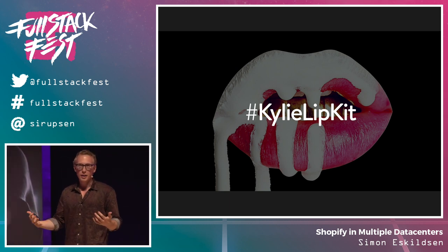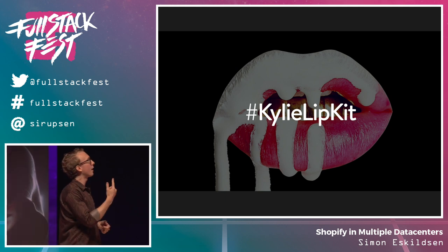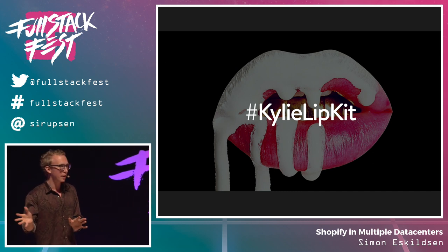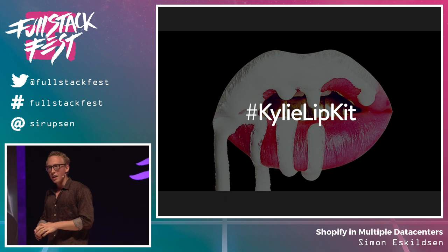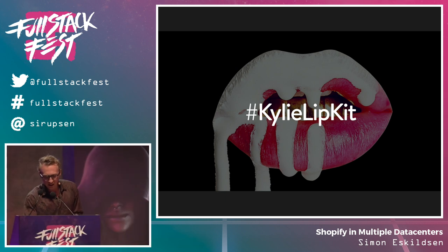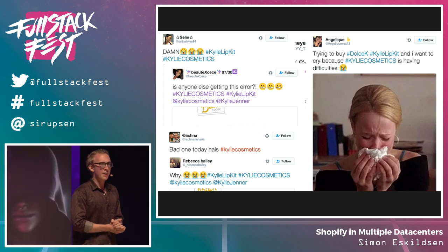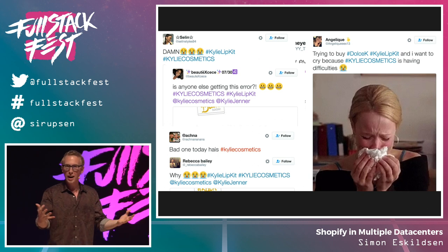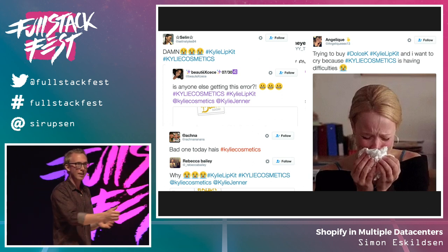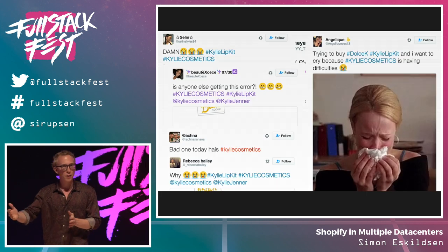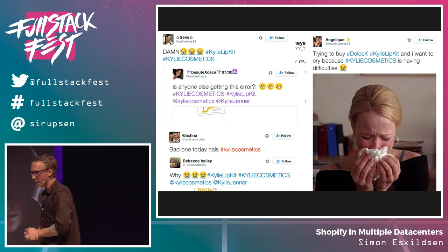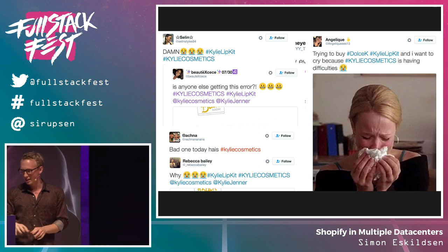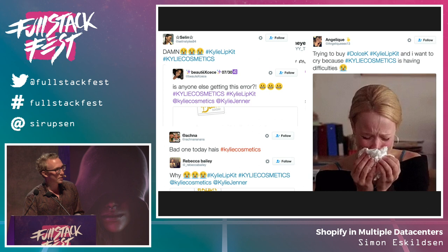Like every good story, there's a villain, and currently our villain is Kylie Jenner. She's an American celebrity from the Kardashian family, famous for being famous, and she sells lipstick. When people can't access this lipstick, they get fairly mad, and this is a big problem for us. It hurts our merchants' trust because with Shopify it's a white-label experience — customers have no idea it's Shopify's fault when they're down. She gets mad at us and we try to fix it. There are apparently even episodes of the Kardashian reality show where Shopify is down while they're filming.